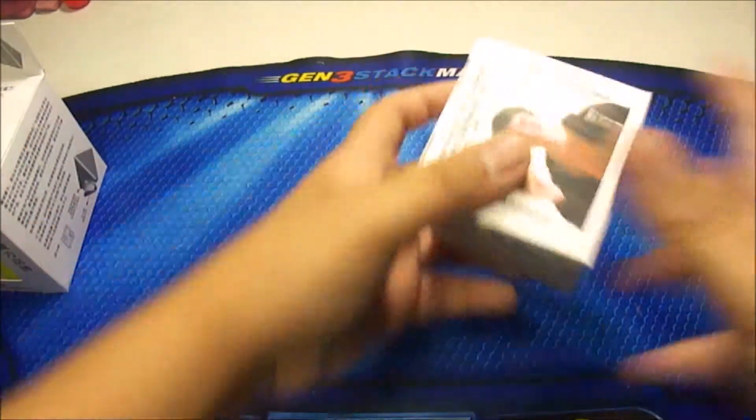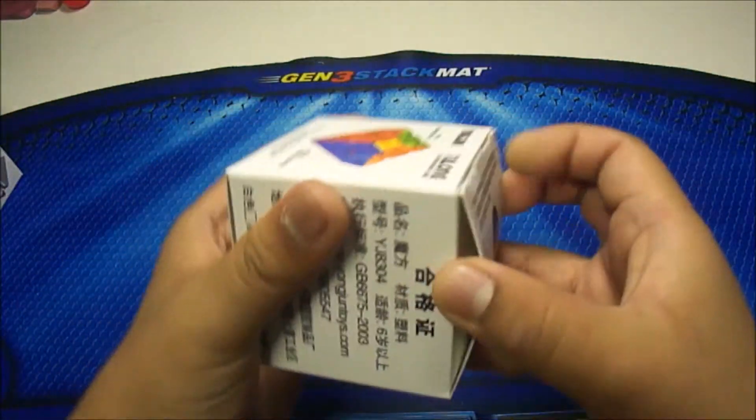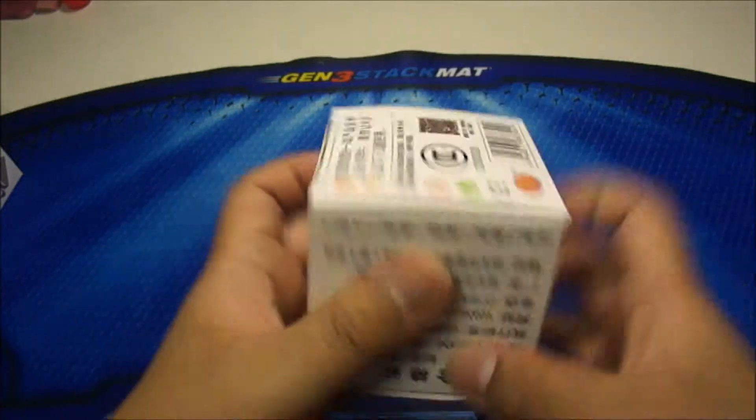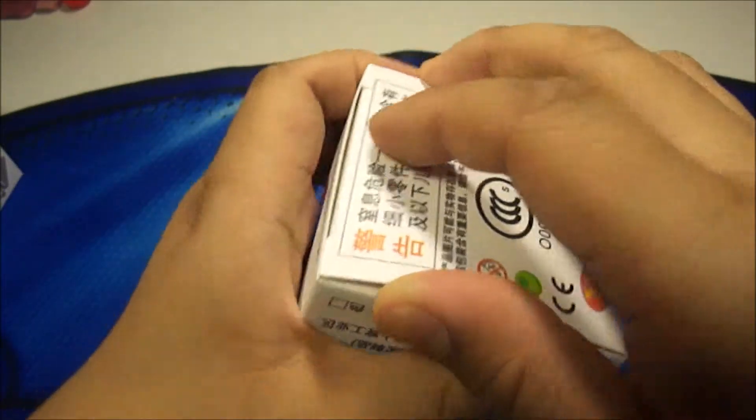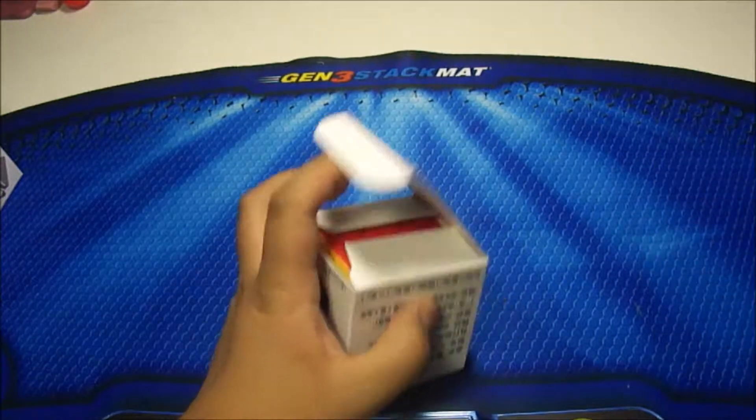So start with the YJ cube. Oh gosh, I hate these boxes. There we go.